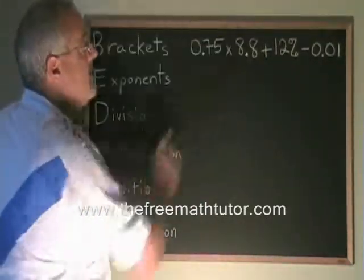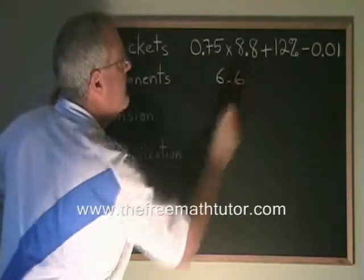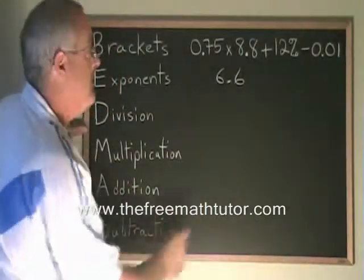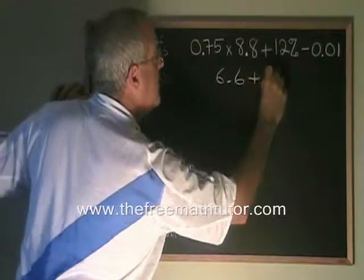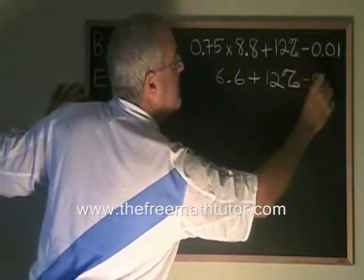0.75 times 8.8 is equal to 6.6. And then we copy down the rest of the problem. Plus 12% minus 0.01.